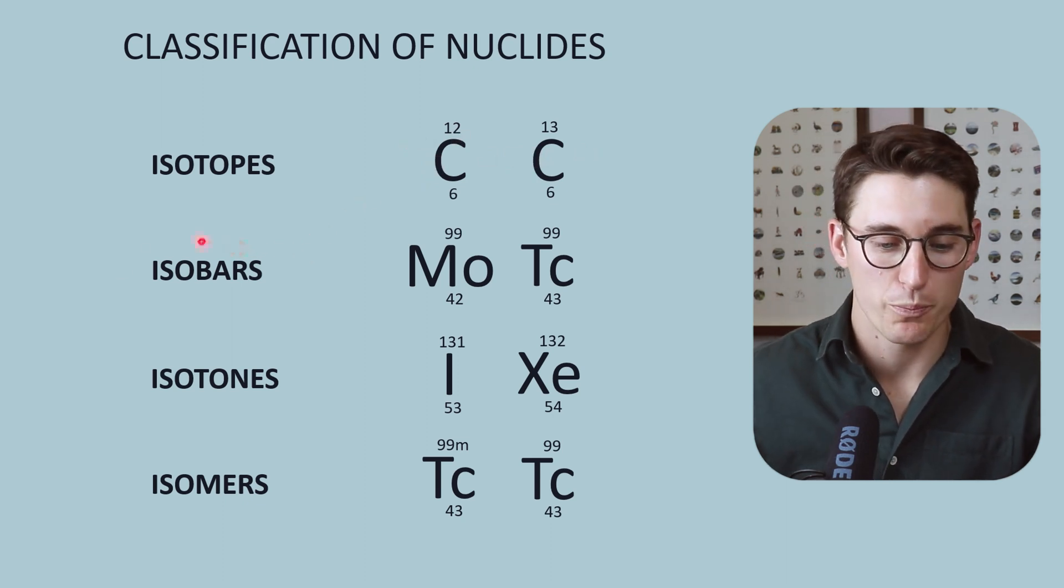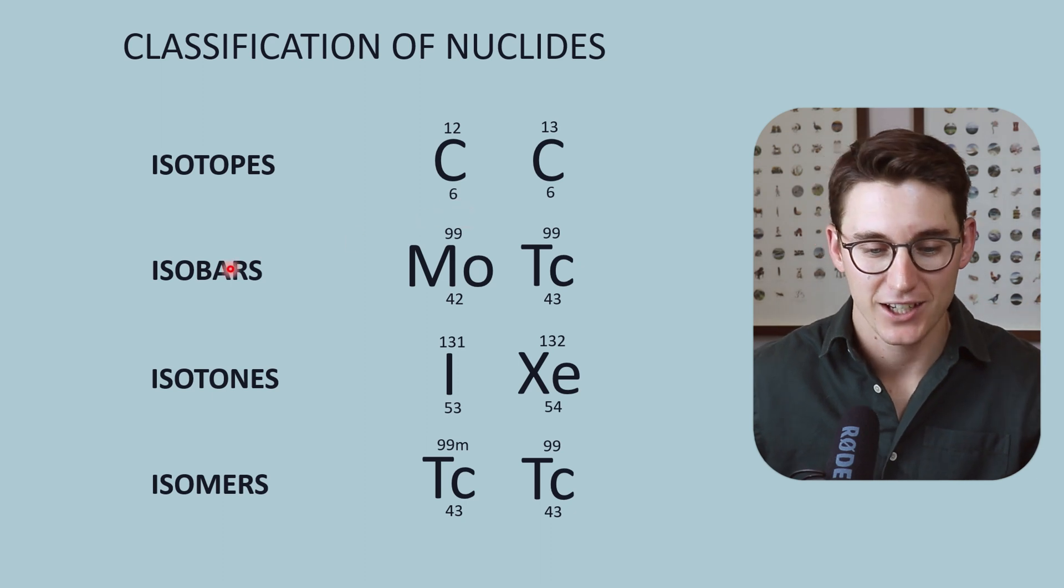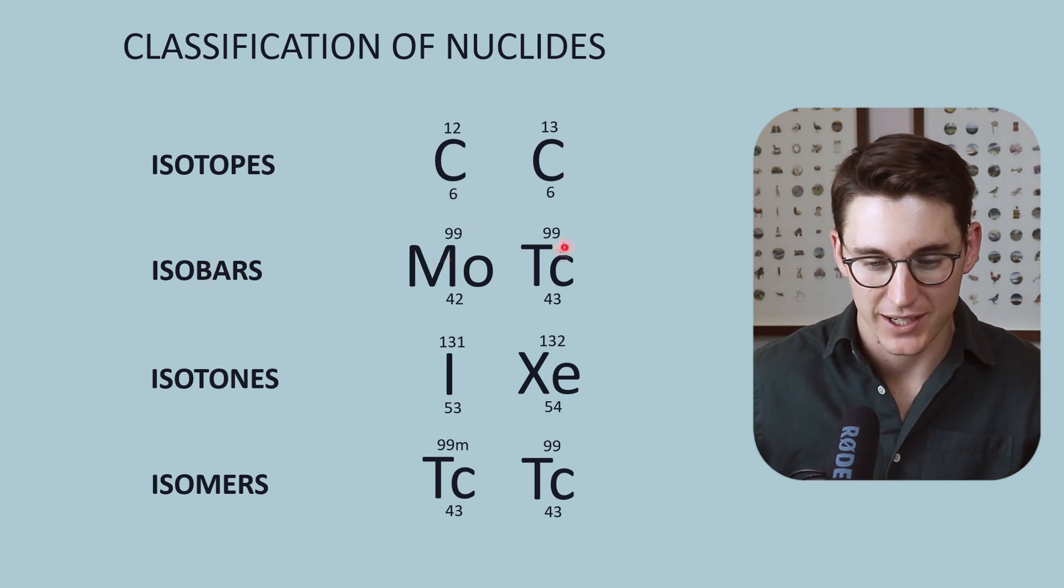We also get isobars. You'll know that our mass number was denoted by the letter A. So isobars, with the letter A, have the same mass number but different atomic numbers.